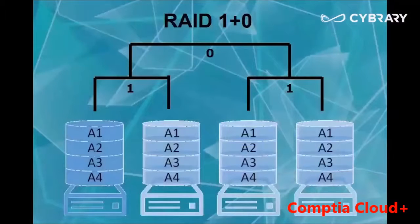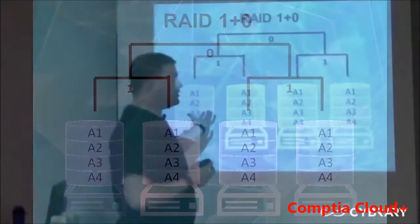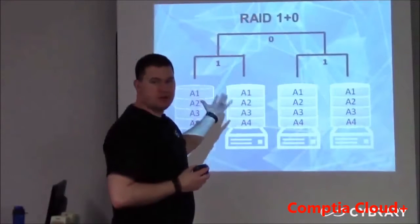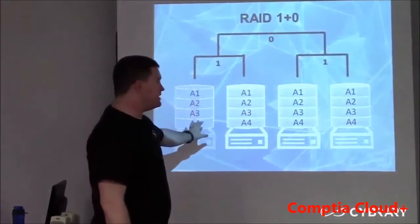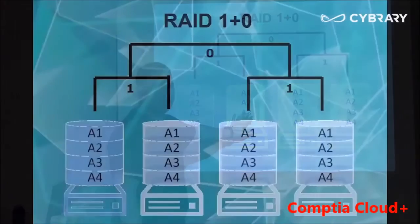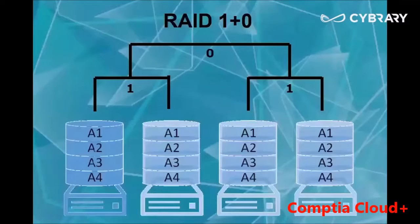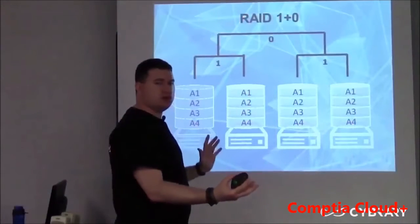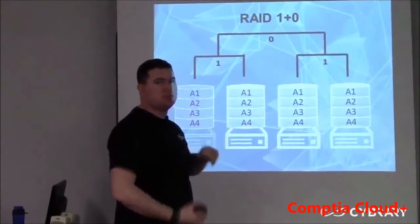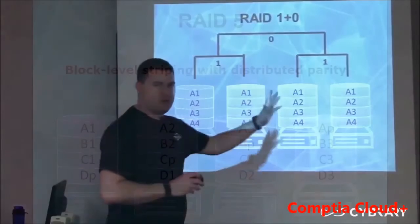RAID 1 plus 0 is the exact opposite of RAID 0 plus 1. It is where you have mirroring first and then those mirrors are striped back and forth. So if one hard drive dies, it is using the other hard drive. Also worth noting: if each one of these hard drives is 100 gigs, you are only actually using 200 gigs — you have 400 gigs worth of hard drives but only using 200 because of the mirror.